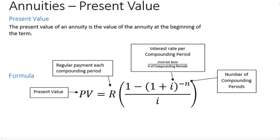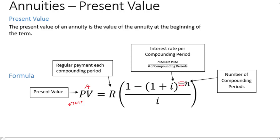So present value — what do we start with? Your textbook sometimes uses A for that, but I always use PV. This is the starting amount. R is our regular payment. Now notice things have moved around: it's 1 minus this, and it's to the power of negative N. I can't tell you how much people forget the negative, including myself. You've got to make sure you include that minus. N is the number of compounding periods — number of years times compounding periods per year. Let's just do some examples because it'll be more obvious as we do them.